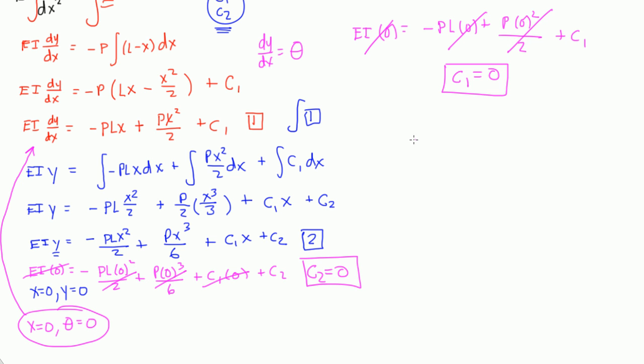That actually makes things a lot more easy. So, our final equation, equation 1, turns into dy dx. Equation 1 right here. dy dx is equal to negative PLX over EI, right? I'm bringing the EI back, plus PX squared over 2EI, plus C1, and C1 is 0. So, this is our equation for our theta, or our slope, or our rotation.